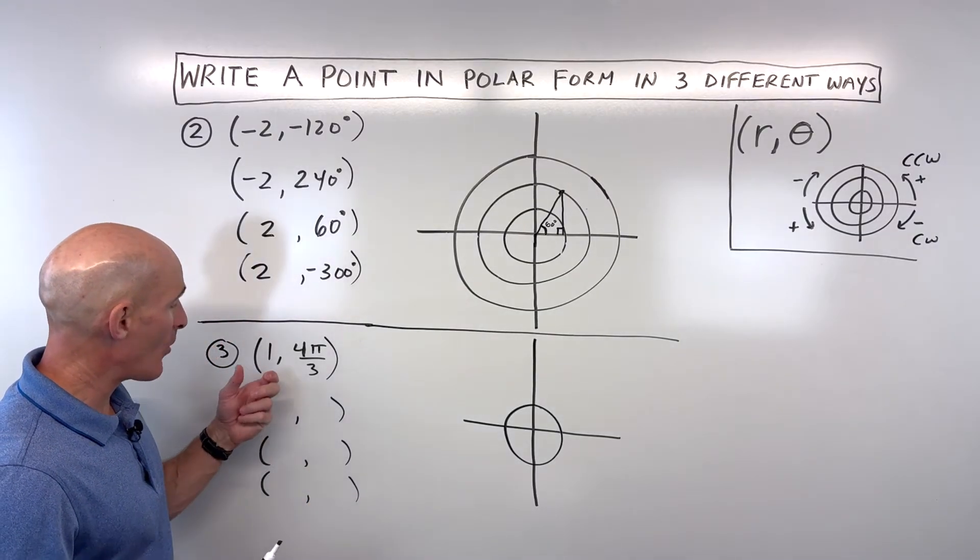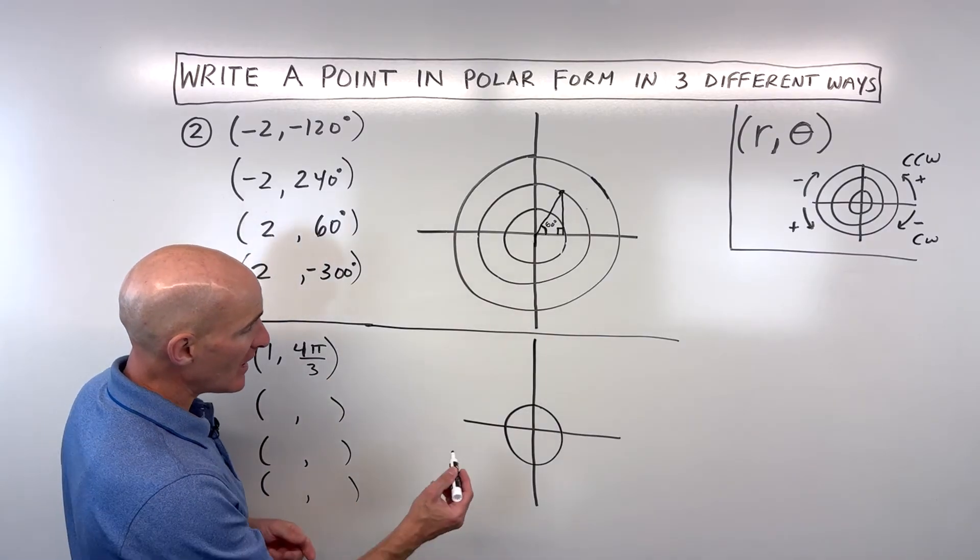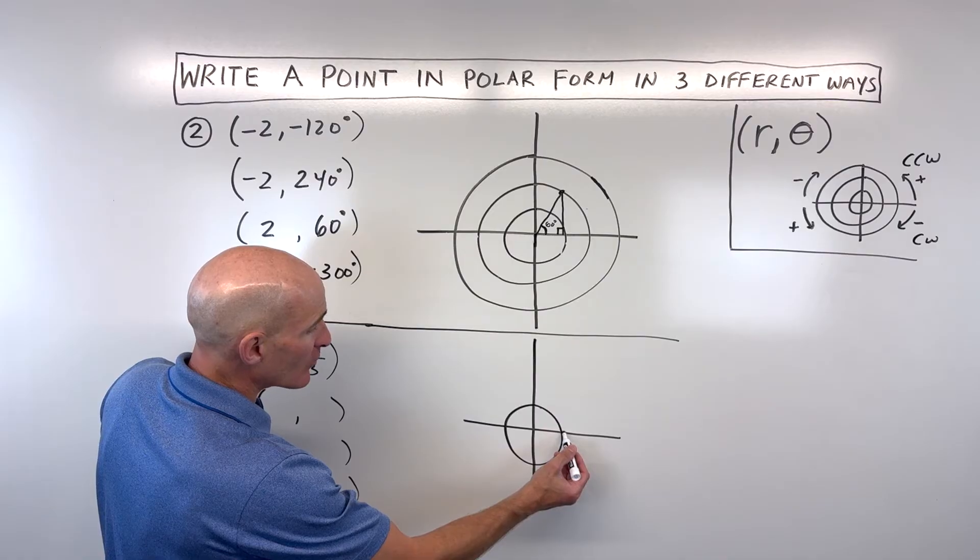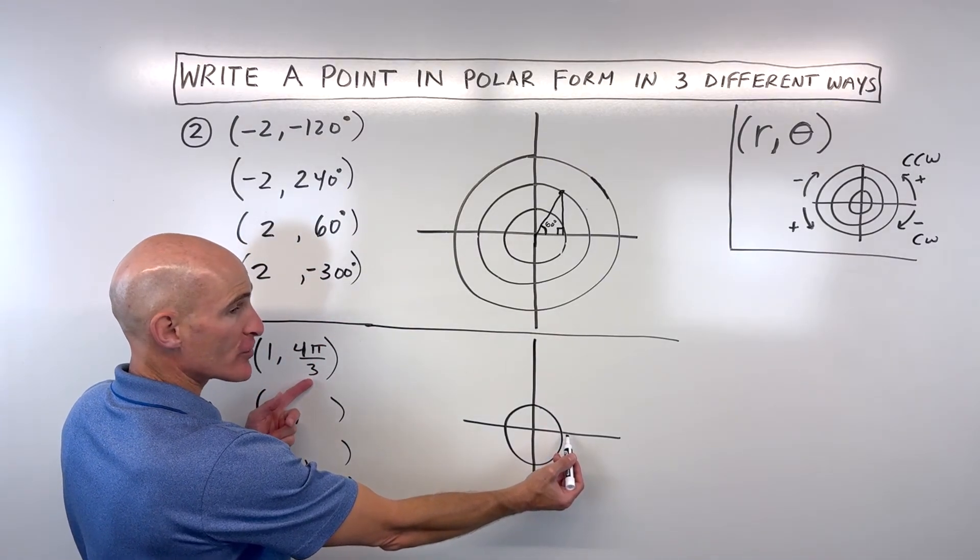Let's look at number three. We've got one, 4 pi over 3. I like to think of this as going right one. We're going to rotate 4 pi over 3, which is like four-thirds pi, which is one and one-third pi.